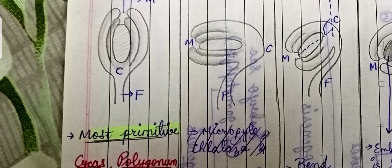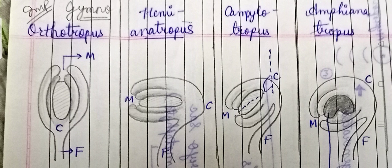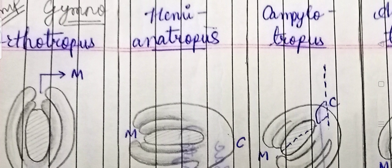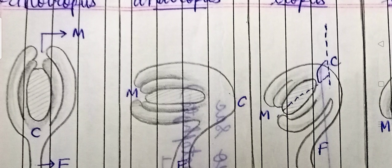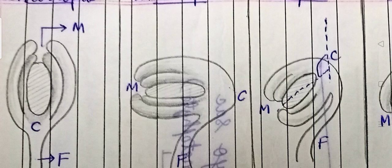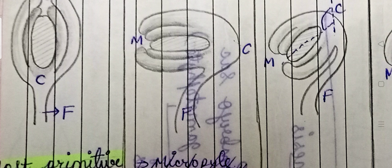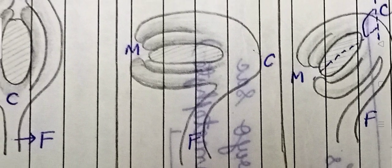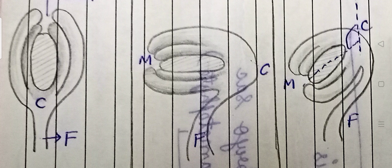In orthotropous ovule, M (micropyle), C (chalaza), and F (funicle) are arranged in three straight lines. The next type is hemi-anatropous. In hemi-anatropous, the micropyle and chalaza are vertically aligned, and M is at a 90-degree angle to F. The example of hemi-anatropous is Ranunculus.